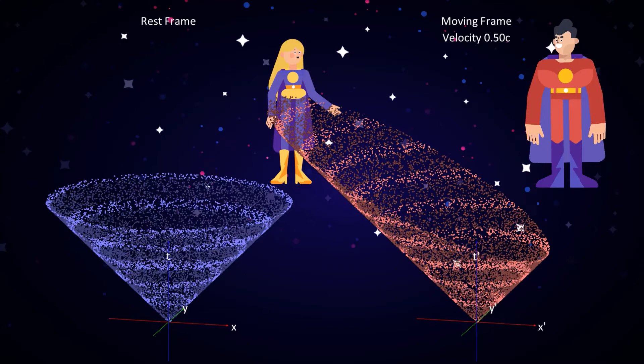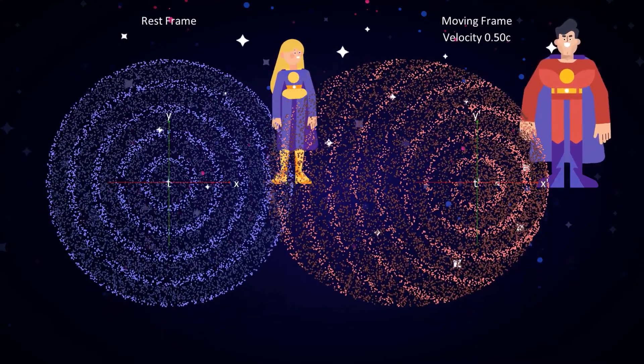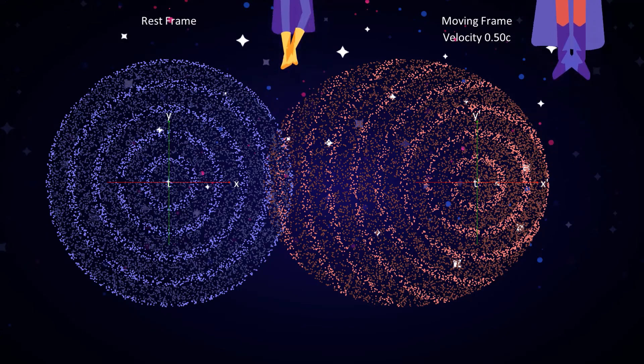And if we now rotate this view back to a space-only view, the circular rings reappear into view, demonstrating that the moving observer really does see spherical waves, exactly as Einstein claimed, and not ellipses at all.